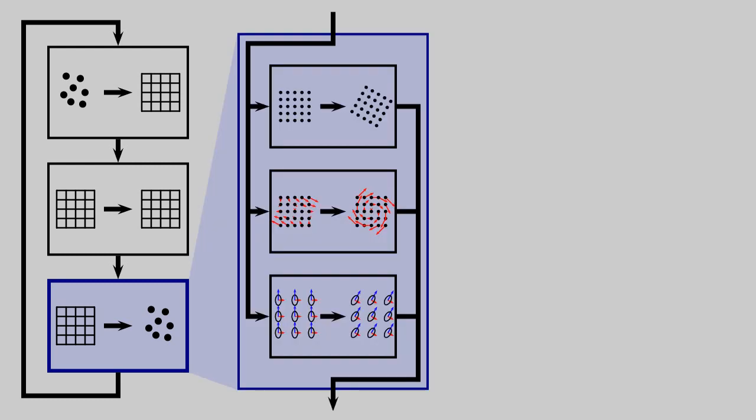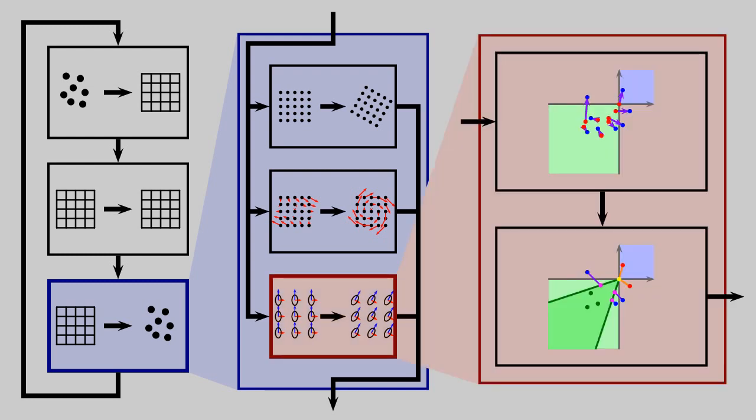During grid-to-particle transfer, particle positions, velocities, and deformation gradients are updated. After the update of the deformation gradients, we apply a projection step. This projection captures the material's plastic behavior.